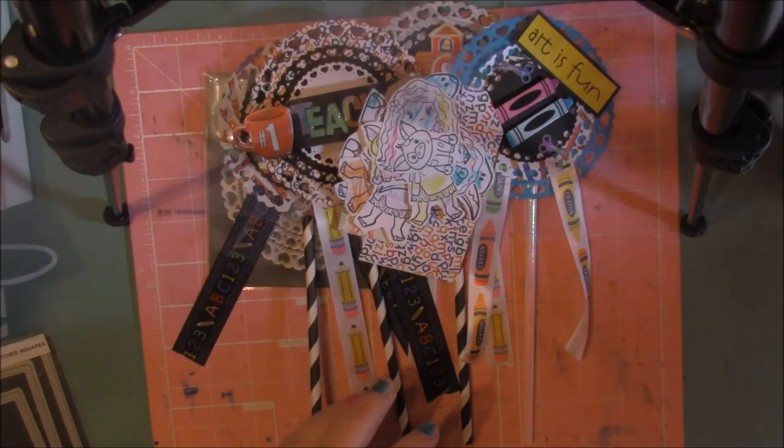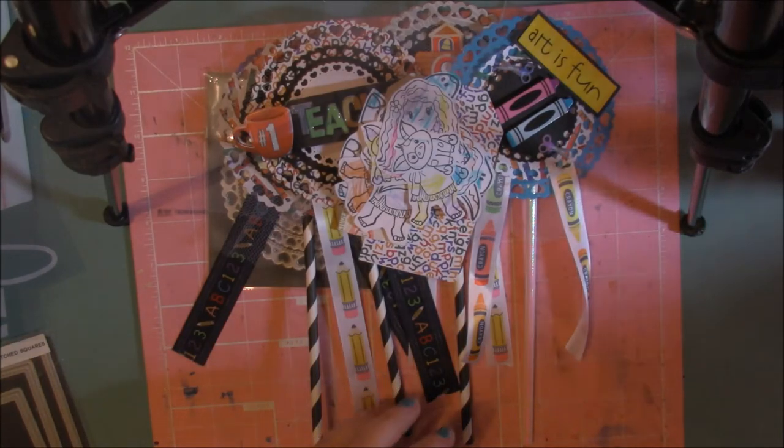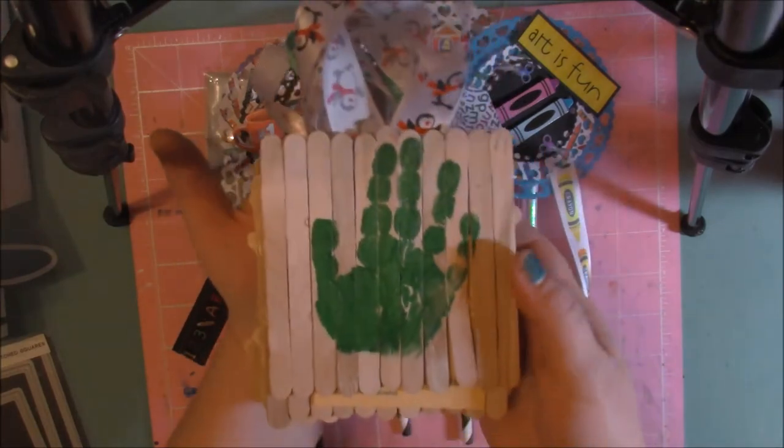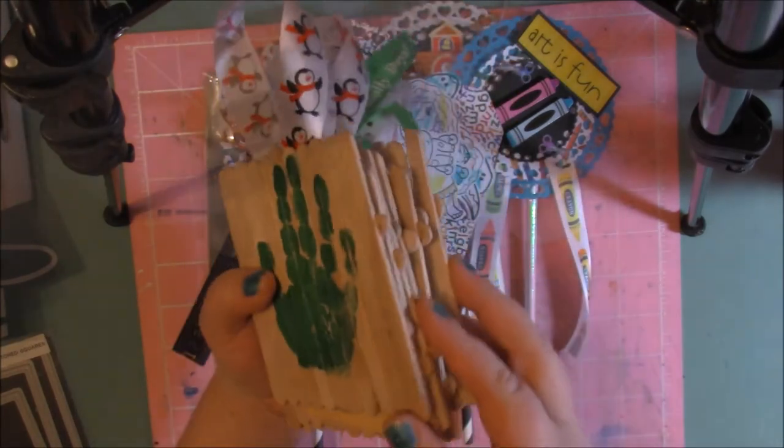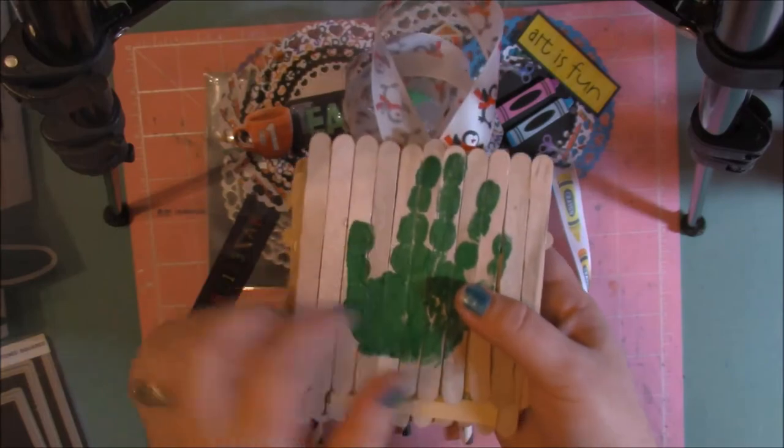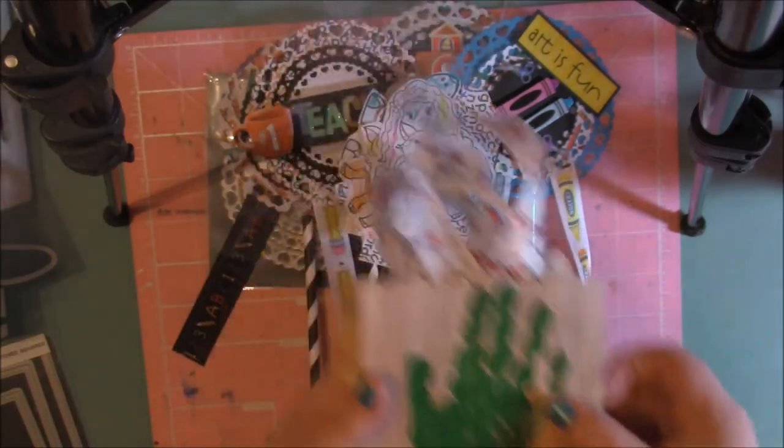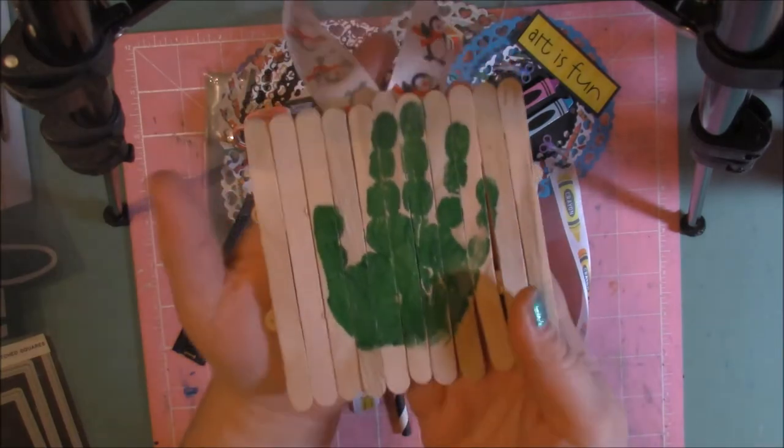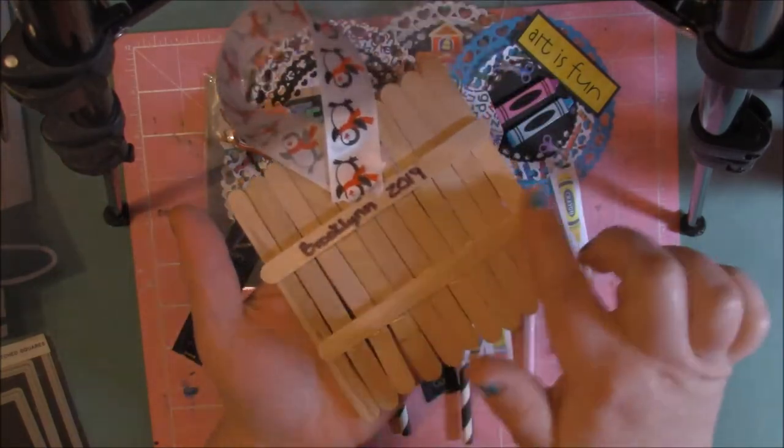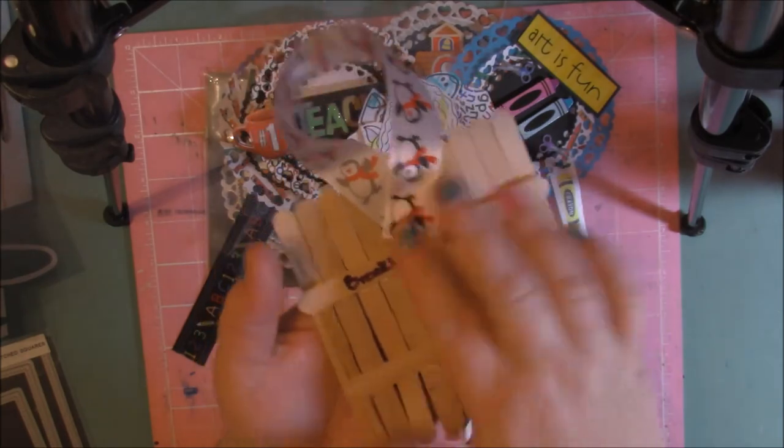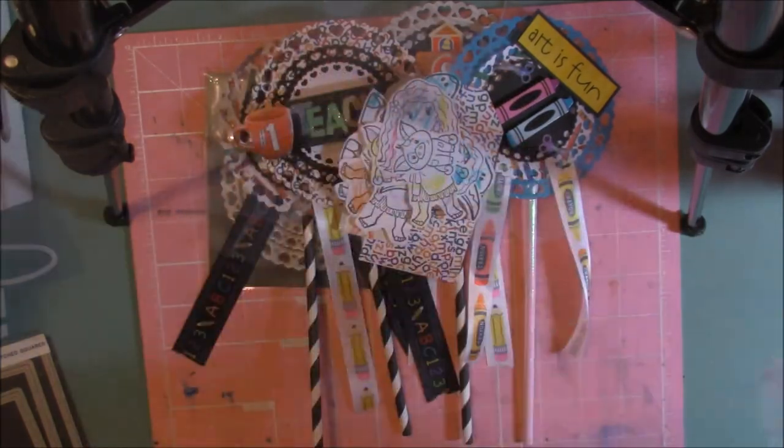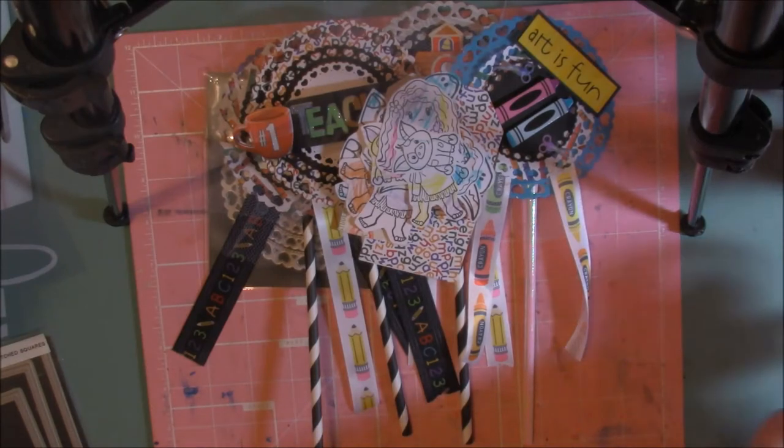And then I also made, had my daughter make some handprint ornaments for all of the family relatives. Just used some popsicle sticks. I'll show you this one. Made some popsicle sticks, glued them all together like this. And then I put her name and the date and then hot glued some ribbon to it. And they can hang this on the tree. So I made those.